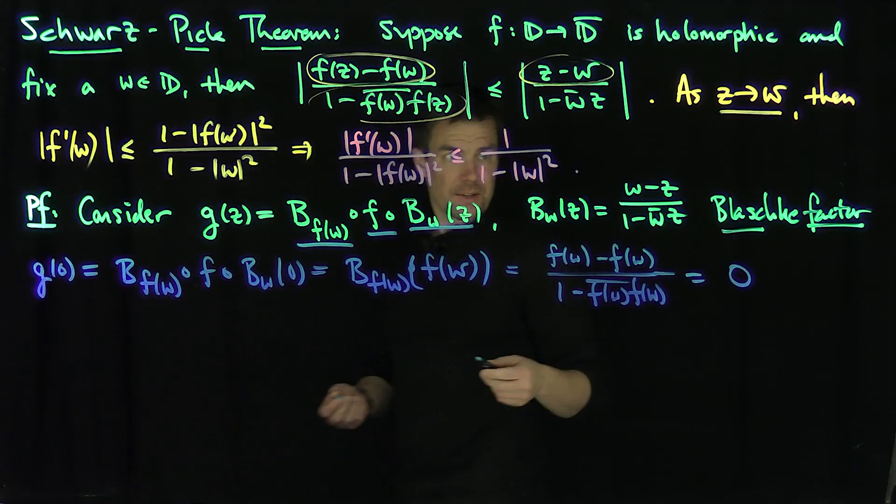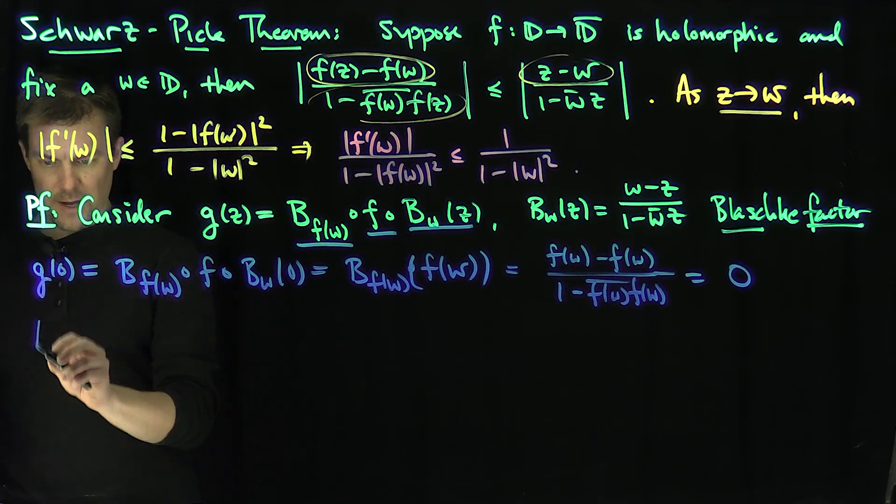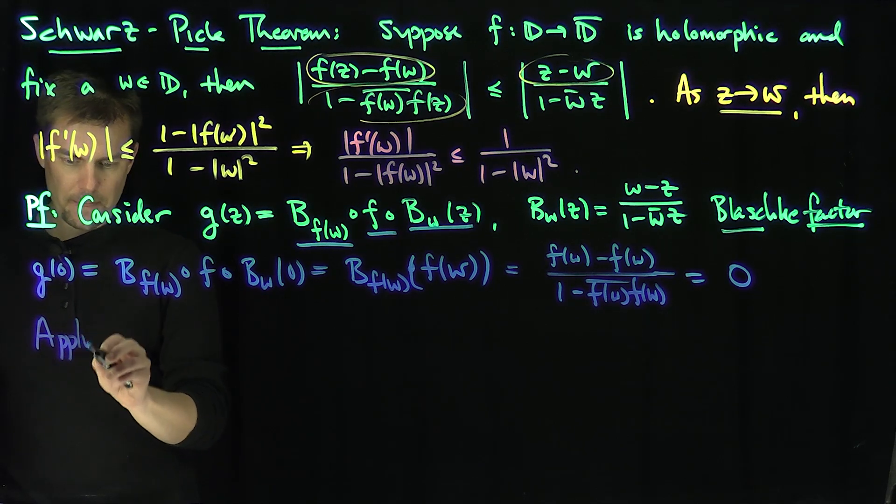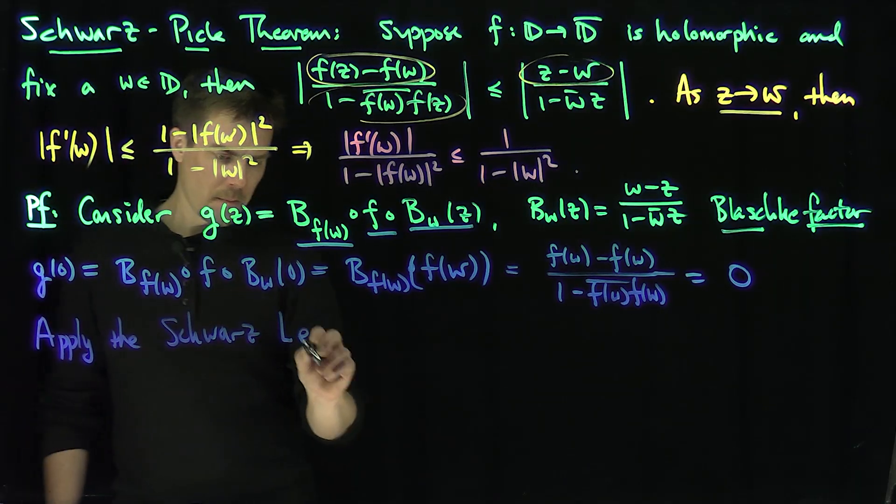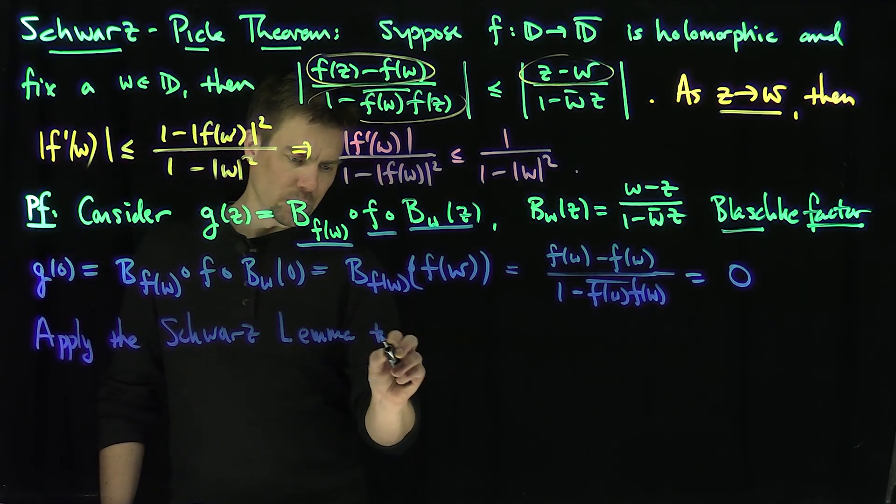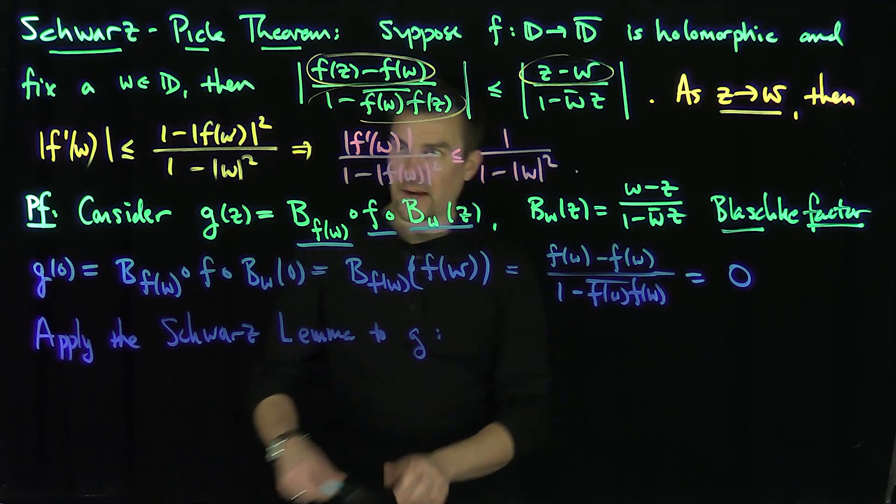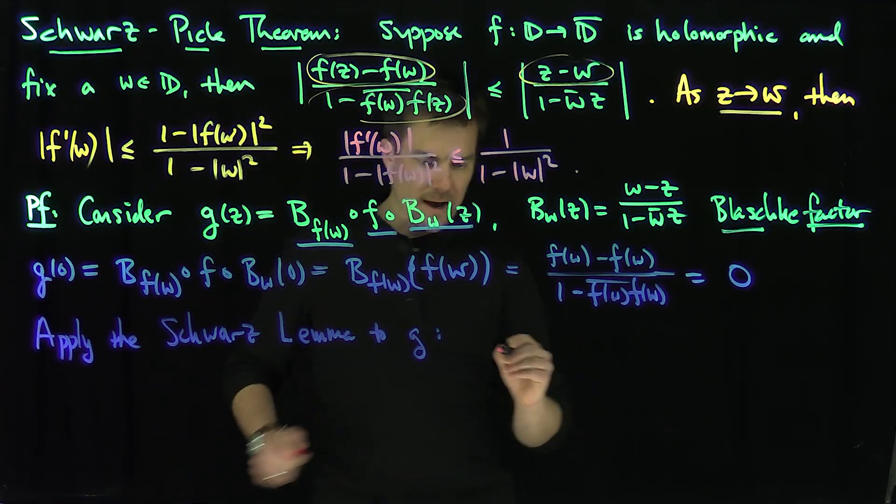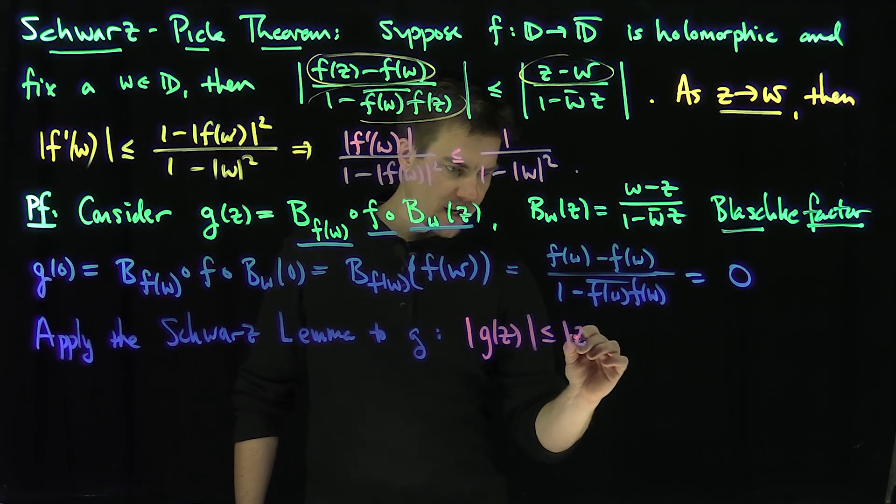So what do we have now? We have g maps the disk to the disk, and g(0) is 0. So we can apply the Schwartz Lemma to g. If we do so, what will we get? We're going to have that the modulus of g(z) is less than or equal to the modulus of z.